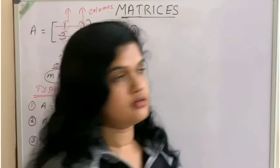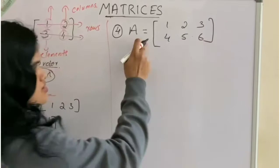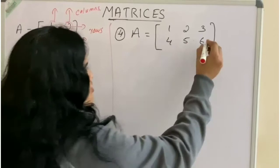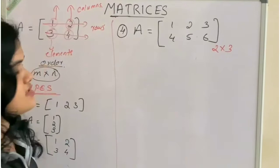For example, this is an example of rectangular matrix. Here, first we consider the order. How many rows? Two rows. How many columns? Three columns. So, this is an example of a rectangular matrix. Number of rows and number of columns are different.